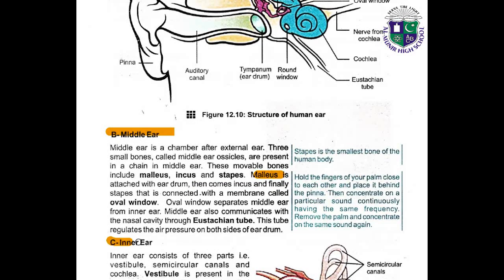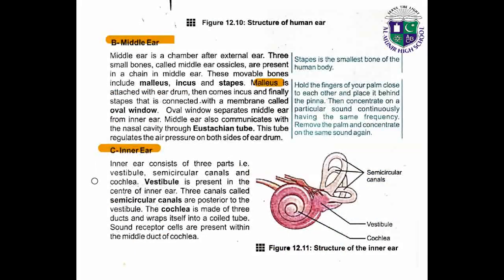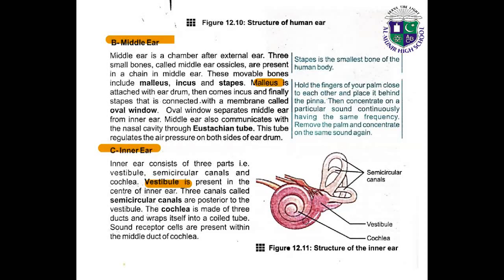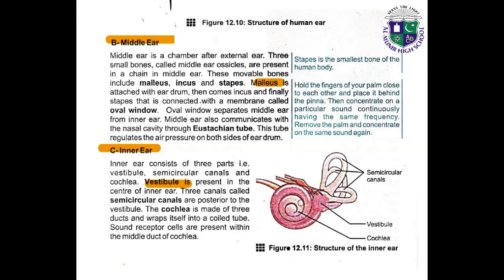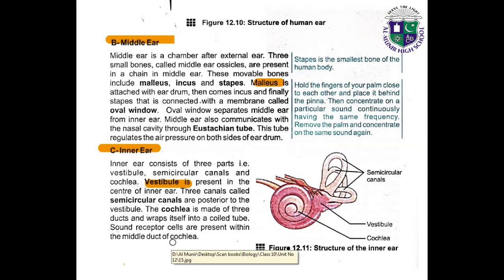The inner ear consists of three parts: the vestibule, the semicircular canals, and the cochlea. The vestibule is present in the center of the inner ear. Three semicircular canals are posterior to the vestibule. The cochlea is made up of three ducts wrapped into a coil, and sound receptor cells are present within the middle duct of the cochlea.